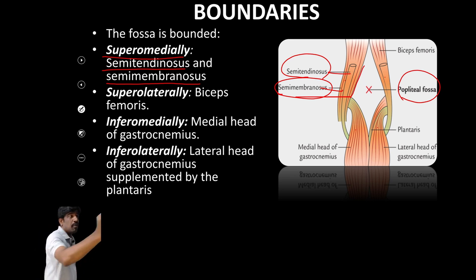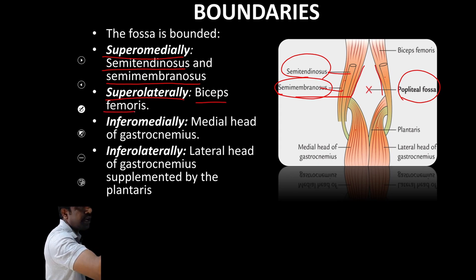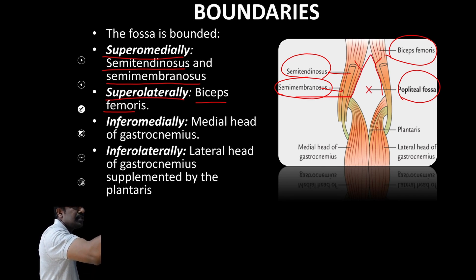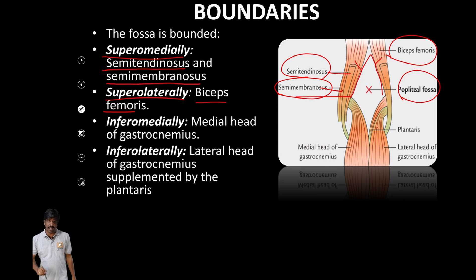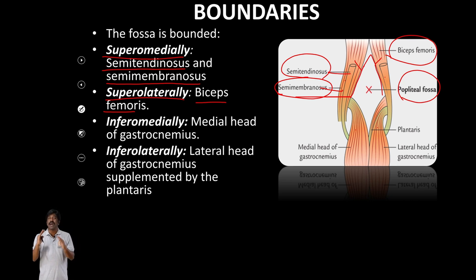Superolaterally, there is only one muscle, that is biceps femoris. Biceps femoris forms the superolateral boundary. So superomedially it is semitendinosus and semimembranosus, and superolaterally it is biceps femoris.